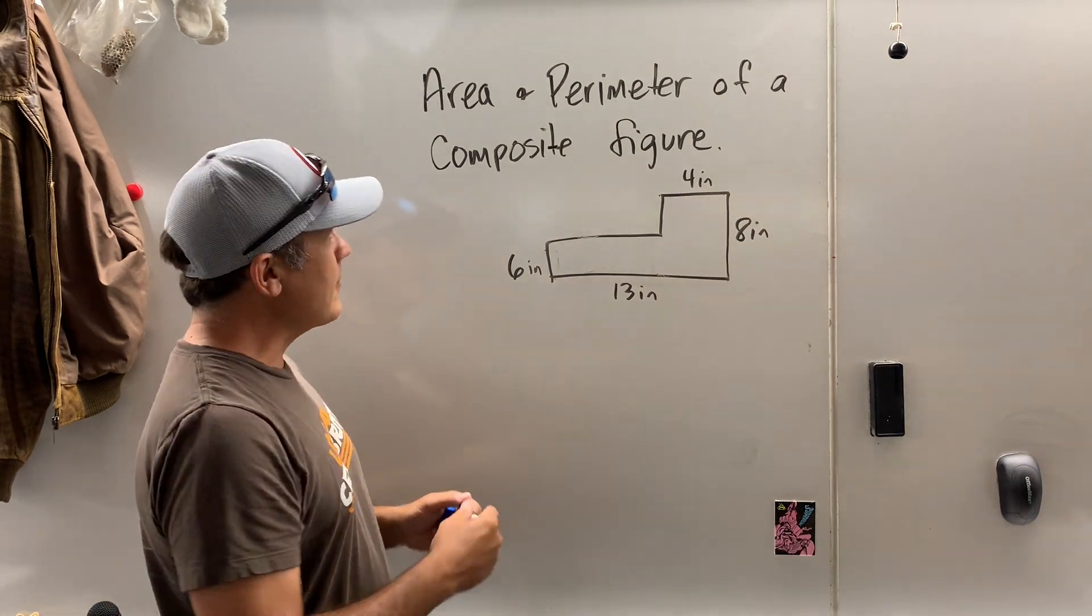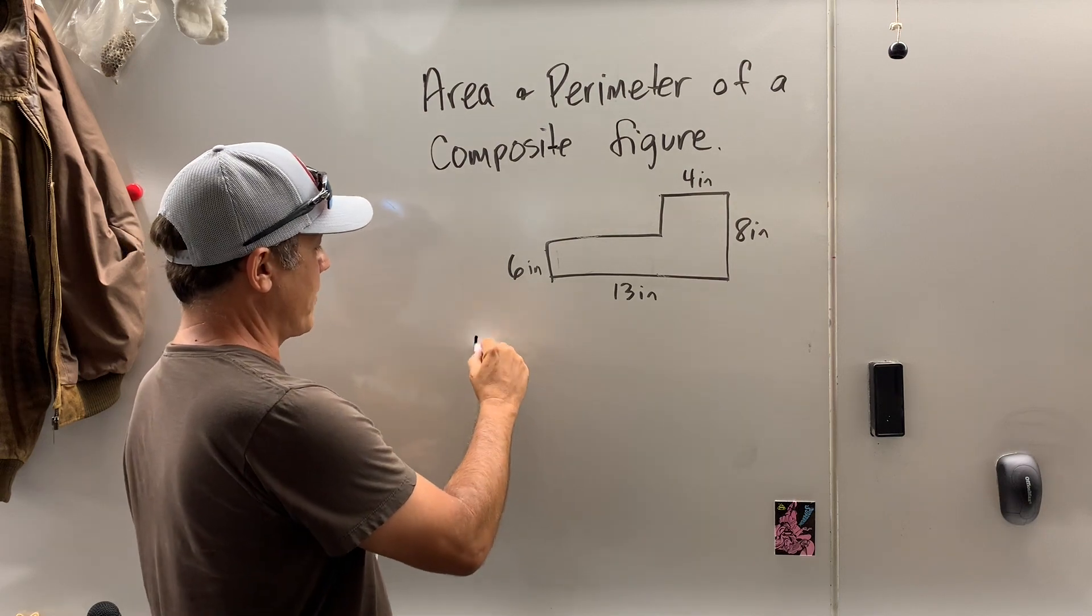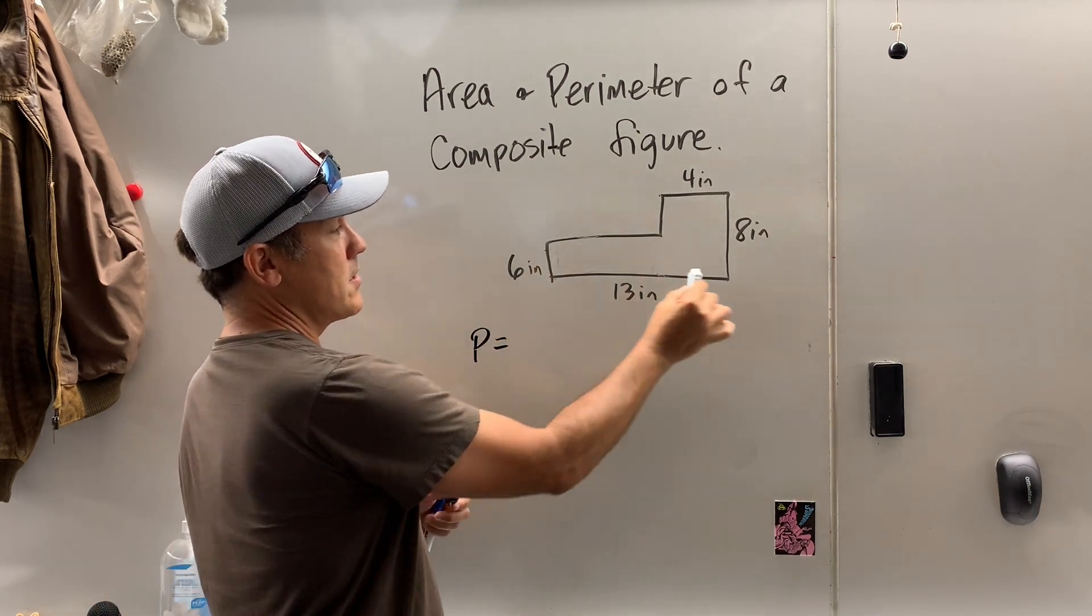So let's see if we can do this one. I'm going to go for the perimeter first. P equals, well, perimeter is the distance around.